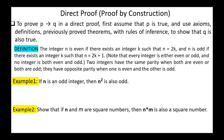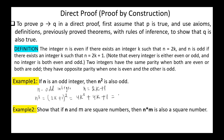Example 1: If N is an odd integer, then N squared is also odd. We start by assuming N is an odd integer. This implies there is some integer K such that N equals 2K plus 1. Then N squared equals (2K plus 1) squared, which is 4K squared plus 4K plus 1, which equals 2(2K squared plus 2K) plus 1. This is the form for an odd integer, so N squared is also odd. Hence, proved.